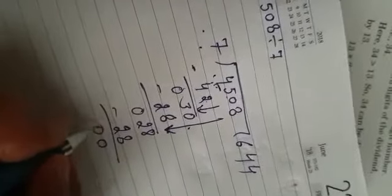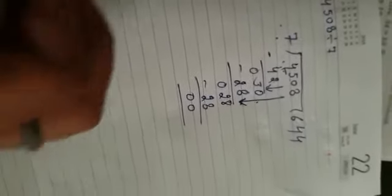28. 8 minus 8 is 0. 2 minus 2 is 0. Now we are going to do our next sum.